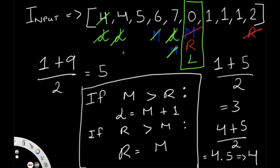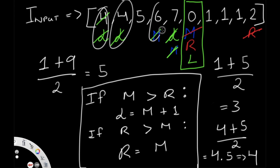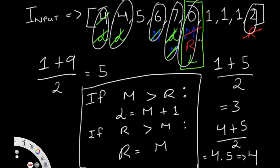Out of nine elements we only visited six. If we had done a linear search we'd visit every single one. So in the worst case our time complexity is O(n), but in most cases we can solve it much faster.